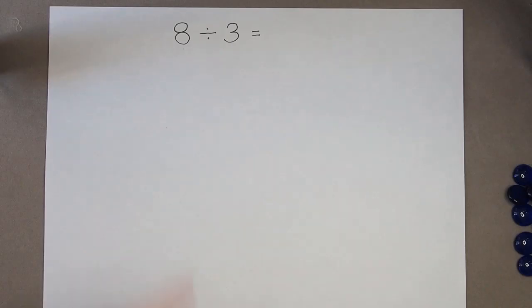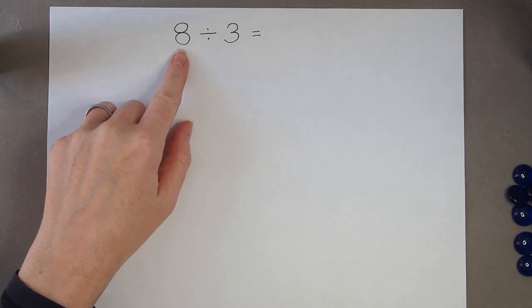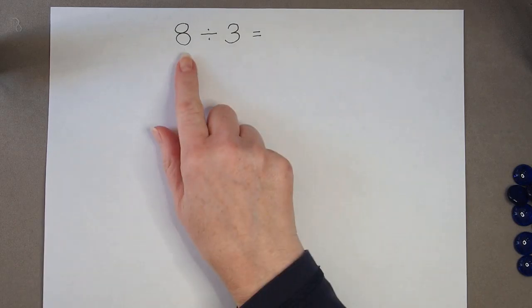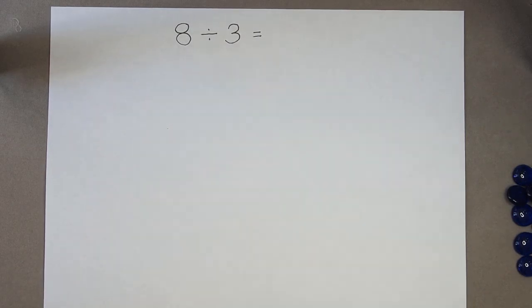So how do we divide a number when we can see that that number is not in the table that we're counting up in? We've got 8 divided by 3. If we know a 3 times table, we know that 8 is not a multiple of 3.